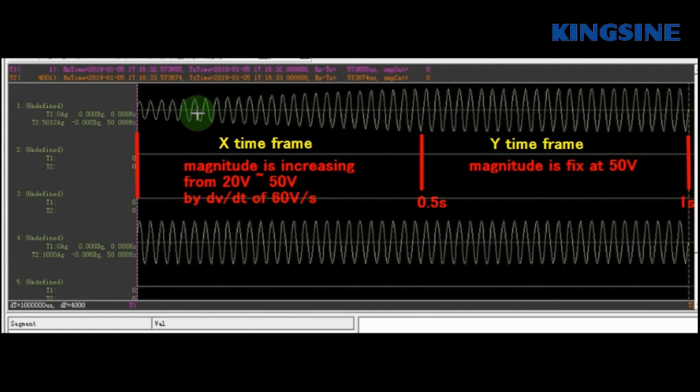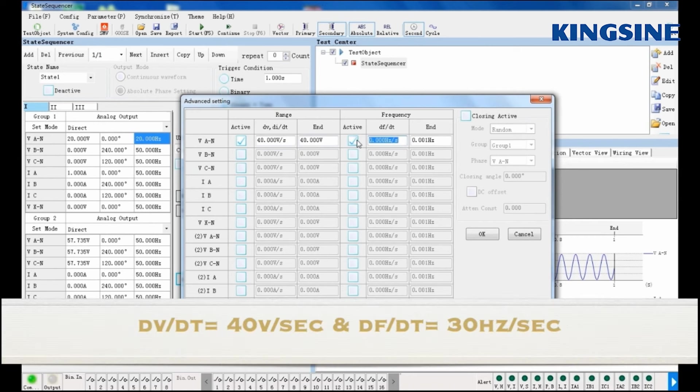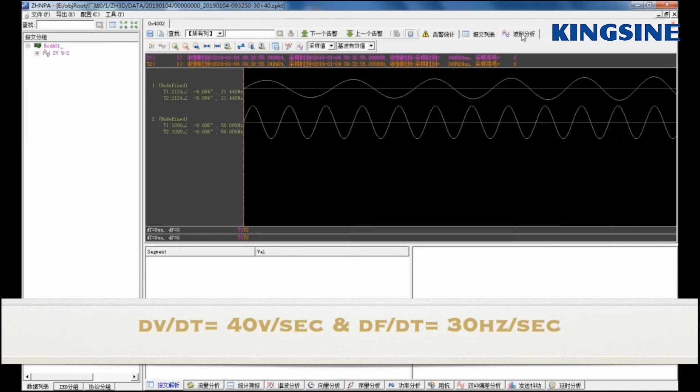In the last simulation, let's try to simulate a voltage signal with DV by DT of 14 V per second and DF by DT of 13 Hz together.